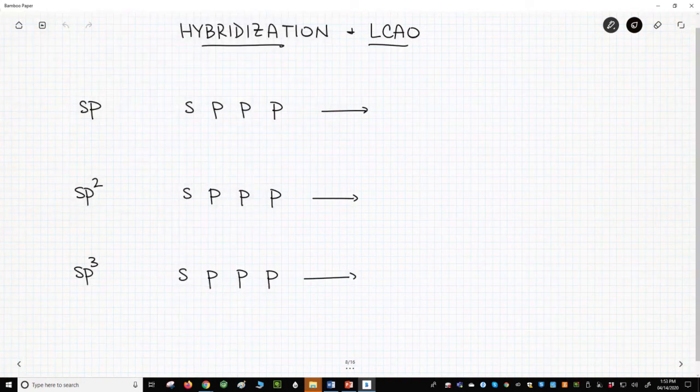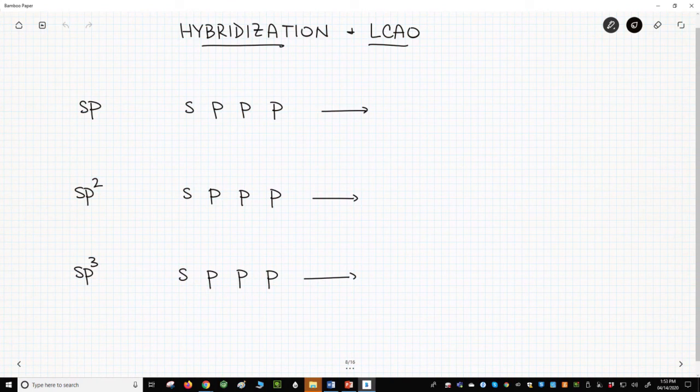On the screen, we have three different hybridization schemes: sp, sp2, and sp3. In all cases, we start with an atom with an s orbital and three p orbitals.